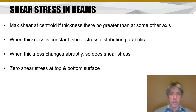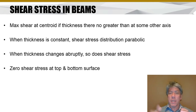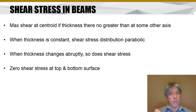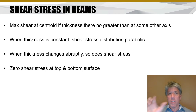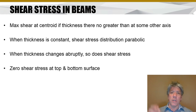If the thickness is constant — as in a simple rectangle — the shear stress distribution will simply be a parabola: maximum in the center and zero at either edge. When the thickness changes abruptly, so does the shear stress, because tau equals VQ over IT. In an I-beam, going from the web to the flange, the thickness changes from the web width all the way to the flange width — a sudden change — resulting in a sudden increase in thickness and therefore a sudden decrease in shear stress.